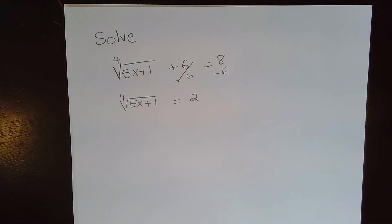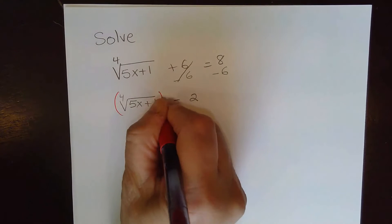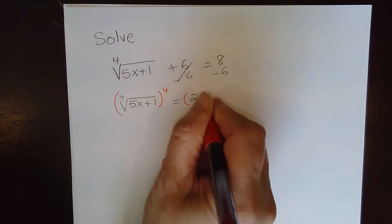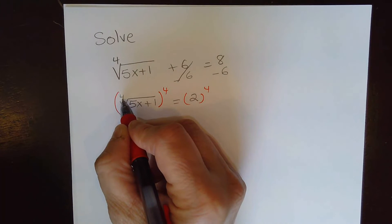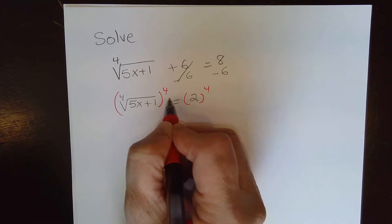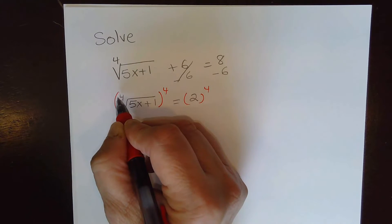Now to solve this equation, I need to raise both sides of the equation by a power of 4. I need to raise it by 4 because that is our index. The index of the radical is 4 so you raise both sides of the equation by a power equal to the index.